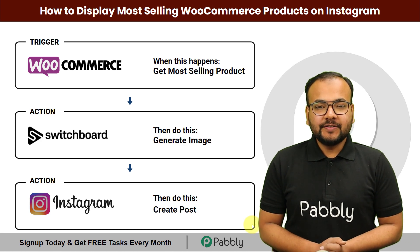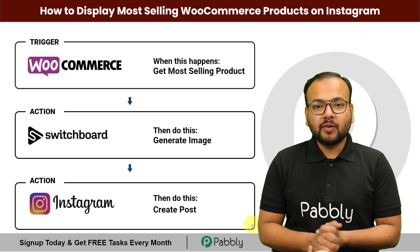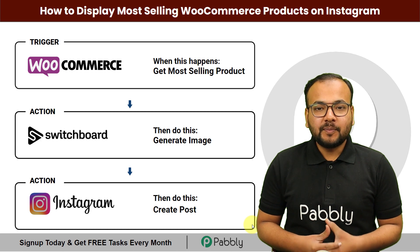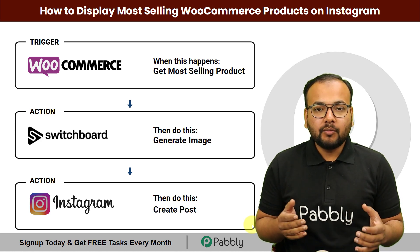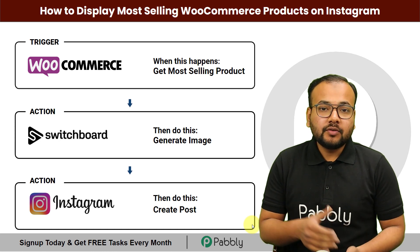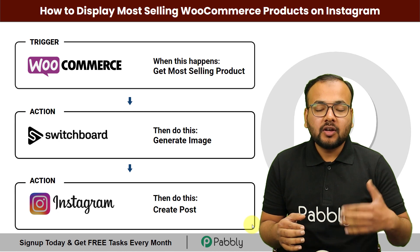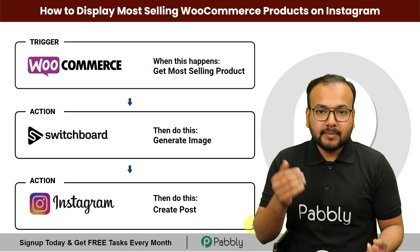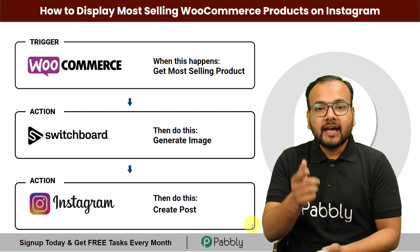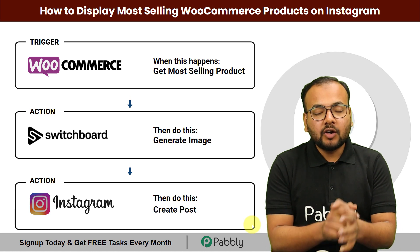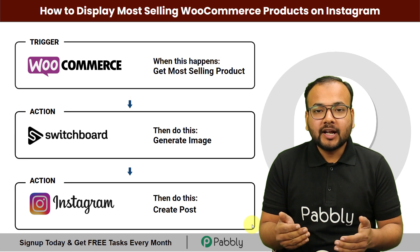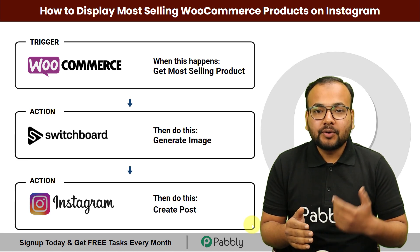Hey everyone. In this video you will learn how you can display your most selling products of your WooCommerce store on Instagram automatically. If you want to promote your most selling products of your e-commerce store on Instagram, this automation is for you. It will fetch the details of most selling products, create a displayable image using Switchboard Canvas automatically, and share that same image on your Instagram account automatically — saving your time and improving your business.